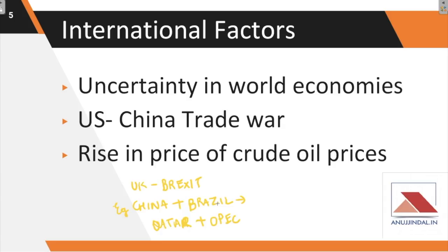On the international front, the first factor was uncertainty in the world economy. The UK economy was at a low point due to high internal political tensions around Brexit, which affected output. Countries like China and Brazil are good examples of what India is now starting to face — a similar phase of low demand on both national and international fronts, causing their GDP to go down.